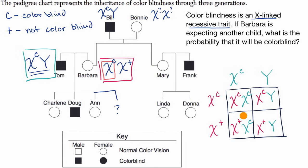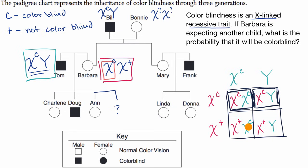Out of four equal scenarios, how many result in a colorblind offspring? X^c X^c is a colorblind female. X^c Y is a colorblind male. X^+ X^c is a female carrier — she will not show the colorblind phenotype. X^+ Y is a non-colorblind male. So two out of four outcomes are colorblind, giving a 50% probability that the offspring will be colorblind.